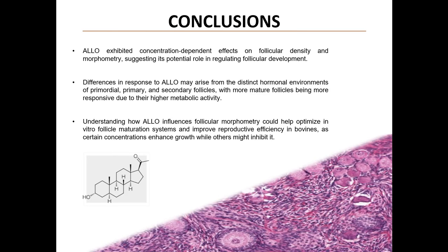In this study, we found that Allo had concentration-dependent effects on follicular development, particularly influencing density and diameter. This suggests Allo plays a role in follicular maturation. The variability in the follicular response likely comes from the different hormonal environments and maturity levels of primordial, primary and secondary follicles. More mature follicles, like primary and secondary ones, are more metabolically active, making them more responsive to Allo. These findings are important for optimizing in vitro follicle maturation, as certain concentrations of Allo can promote growth while others might inhibit it.